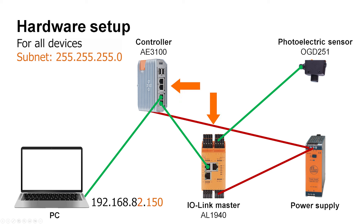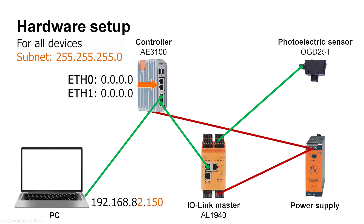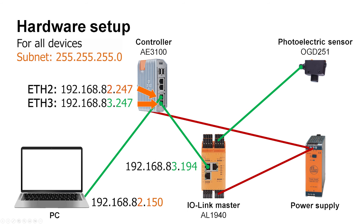Now let's set up the connection between the IO-Link master and the controller to read the process value of the photoelectric distance sensor. The power supply and the photoelectric distance sensor are already connected to the IO-Link master. Additionally, connect the 24VDC power supply to the PLC. Ethernet port 0 and port 1 of the controller are configured as 0.0.0.0 and not activated by default. Connect the IO-Link master to the PLC using Ethernet port 3 (ETH3), making sure you are connected to the Fieldbus ports of the IO-Link master. The PC is connected to ETH2 of the AE3100 for programming. All ports are in the 255.255.255.0 subnet.